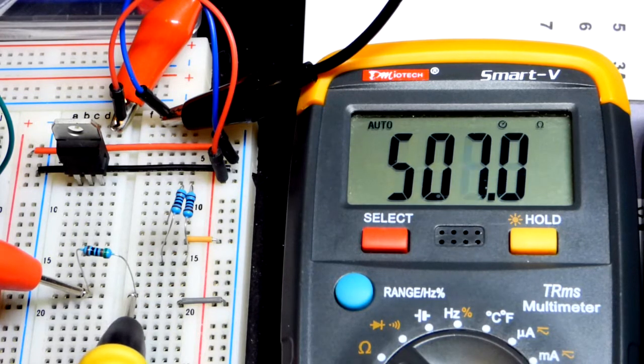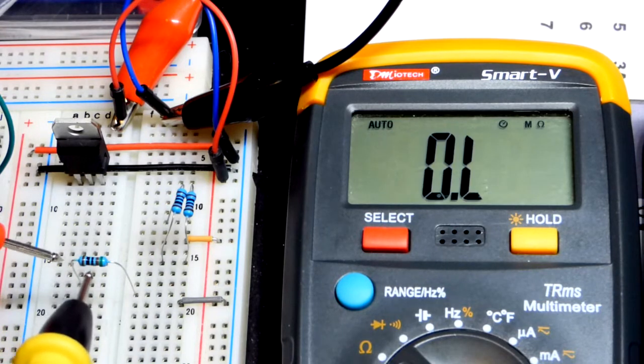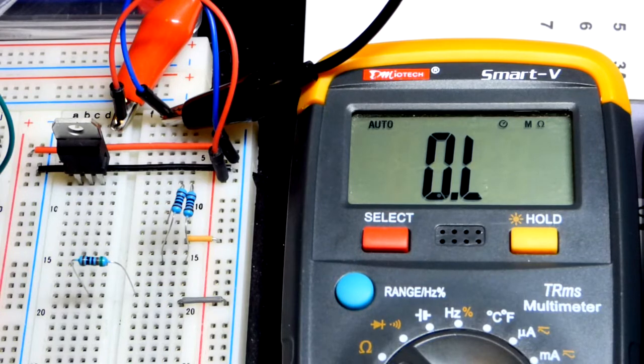And there you can see we have the 510 ohm resistor there. So practically the same resistance between this single resistor and those two parallel resistors.